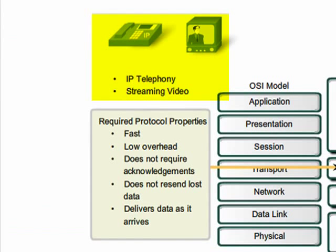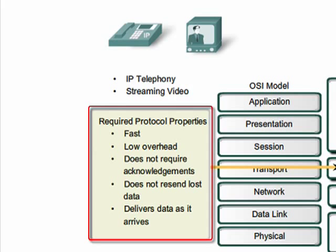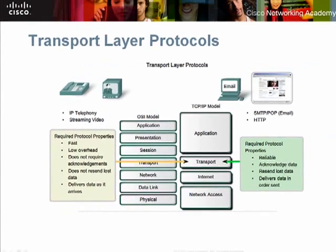Other applications such as IP telephony and streaming video are more tolerant of the loss of small amounts of data. For example, if one or two segments of a video stream fail to arrive, it would only create a momentary disruption in the stream. This may appear as a distortion in the image but may not even be noticeable to the user. These applications must use a transport layer protocol that has low overhead and is fast, as is UDP.